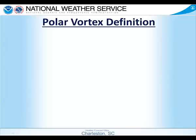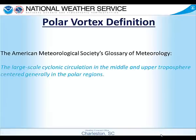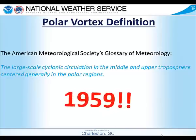Now that we've warmed you up a little bit with talking about tropical cyclones, the next thing we're going to tackle is a question that's been in the news quite a bit lately — what does the polar vortex really mean? We're going to try to dispel some of those myths and explain what the polar vortex means to us here in southern South Carolina and southeast Georgia. According to the American Meteorological Society's Glossary of Meteorology, the polar vortex is a large-scale cyclonic circulation in the middle and upper troposphere, centered generally in the polar regions. This definition was put in print in 1959, so it is not a new phenomenon.